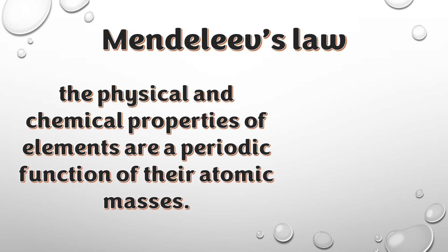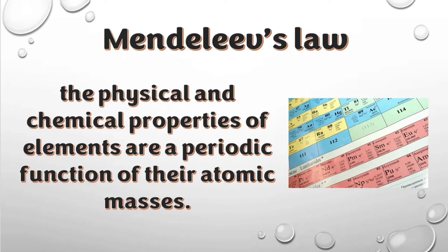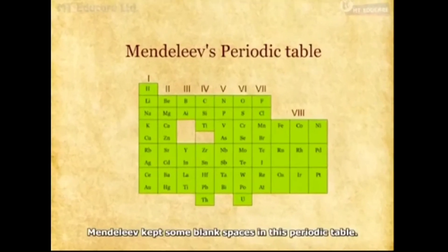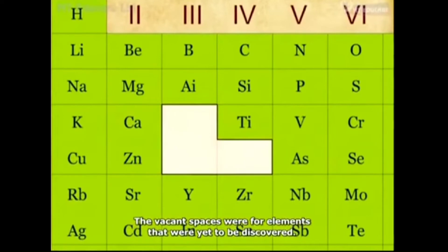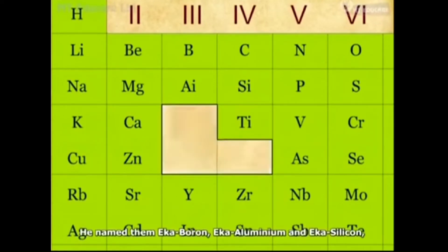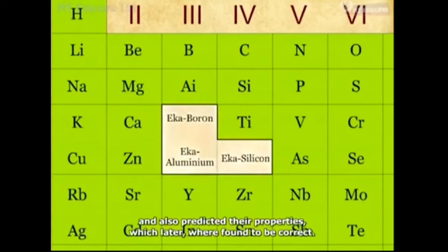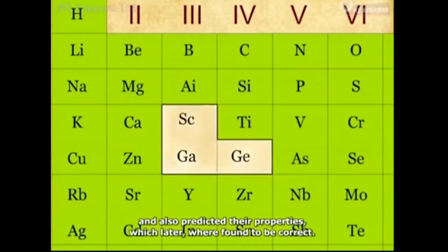Mendeleev's law states that the physical and chemical properties of the elements are a periodic function of their atomic masses. Mendeleev kept some blank spaces in his periodic table for elements yet to be discovered. He named them eka-boron, eka-aluminum, and eka-silicon, and also predicted their properties, which were later found to be correct.